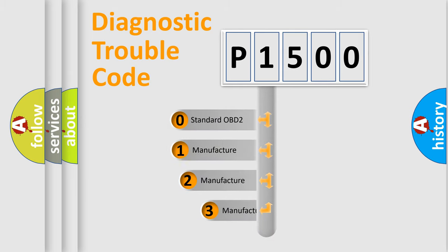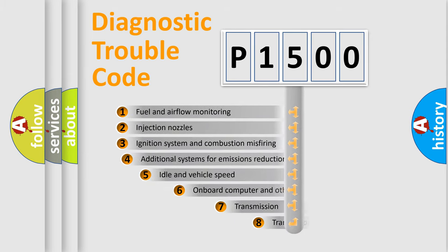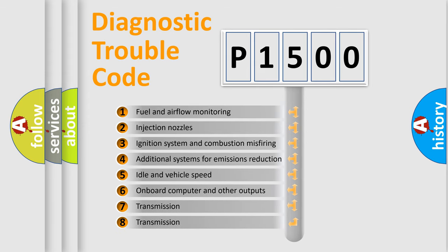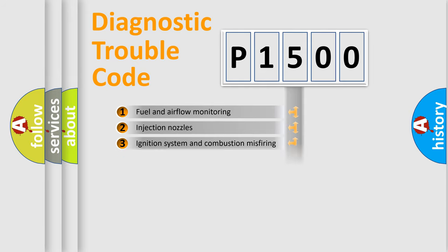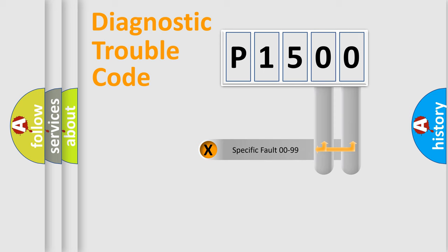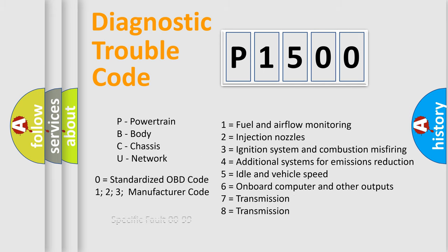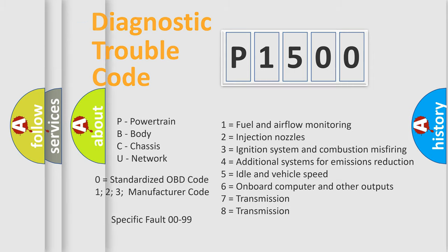If the second character is expressed as zero, it is a standardized error. In the case of numbers 1, 2, or 3, it is a manufacturer-specific error expression. The third character specifies a subset of errors. This distribution is valid only for the standardized DTC code. Only the last two characters define the specific fault of the group, and this division is valid only when the second character is zero.